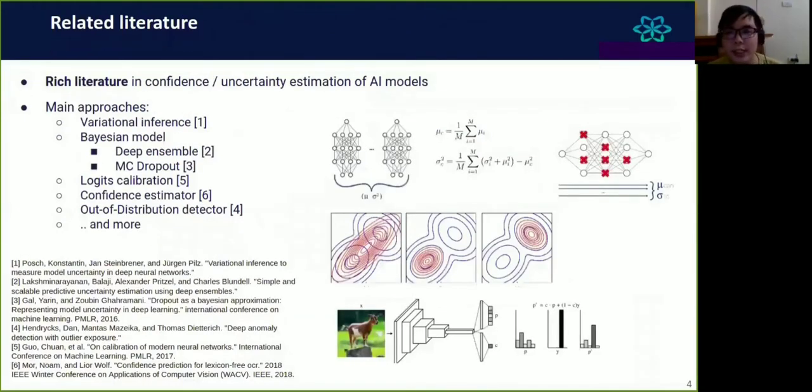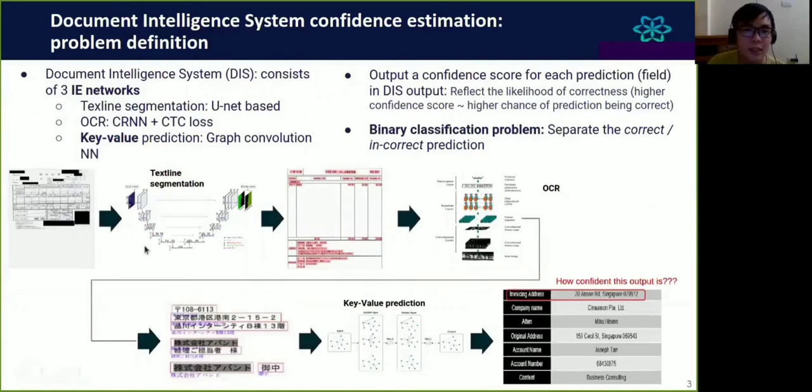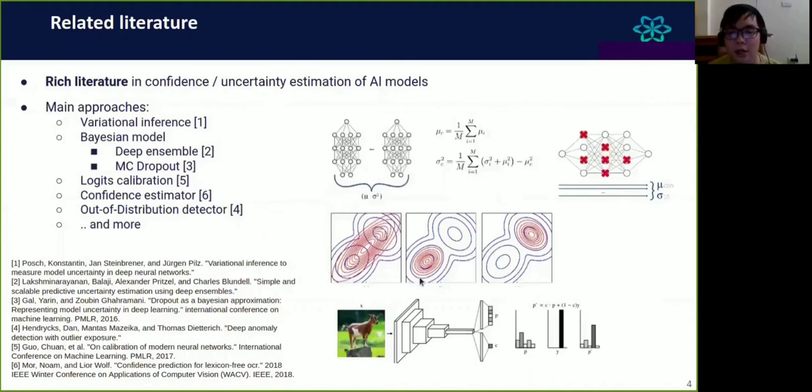Before we move into the details of the proposed method, let's take a look at related literature. Confidence score or uncertainty estimation for AI models has very rich literature with many main approaches, for example, variational inference, Bayesian models, logit calibration, confidence estimator, or out-of-distribution detector. Based on this literature, we want to find a solution that can be easily adapted into current existing DIS system. That means we don't need to modify too much on existing models. For example, we do not have to retrain the entire DIS model. There are some criteria we should consider, such as computational capacity or the type of uncertainty we want to capture when we design the confidence score model.